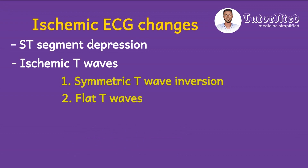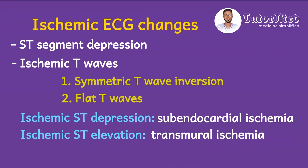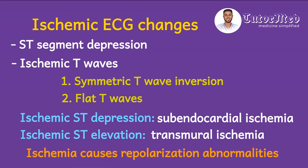Sometimes T waves instead of being inverted would just be flat, but this is not commonly seen. I want to reiterate that ischemic ST segment depression means there is subendocardial ischemia of that wall. For example, ST segment depression in leads V2, V3, V4 shows that the myocardium of the anterior wall closer to the endocardium is in trouble. Ischemic ST segment elevation, by contrast, means there is full-thickness or transmural ischemia. Note that ischemia usually affects repolarization — that is why the ST segment and T waves are most commonly affected — and it is rare to find Q waves in non-ST elevation acute coronary syndrome.